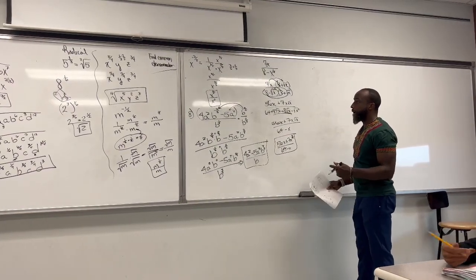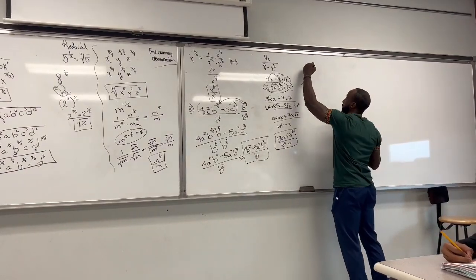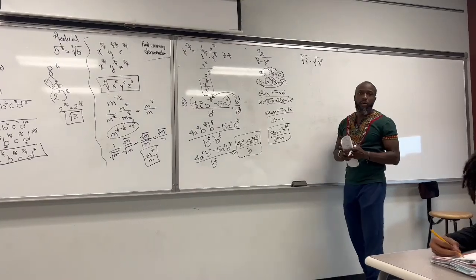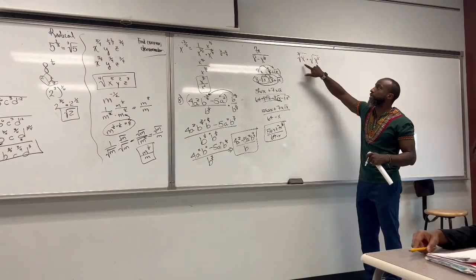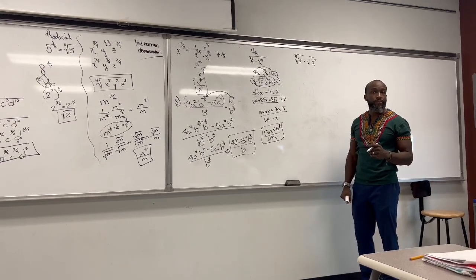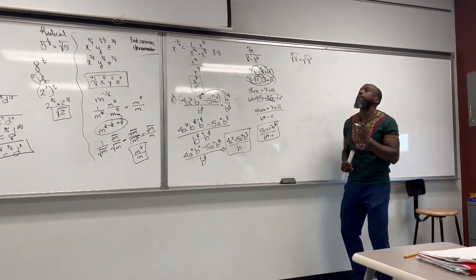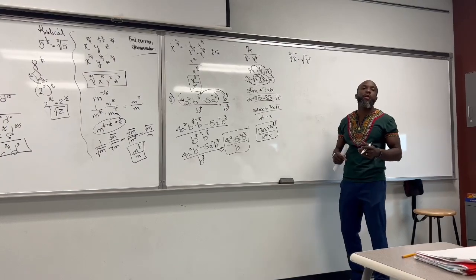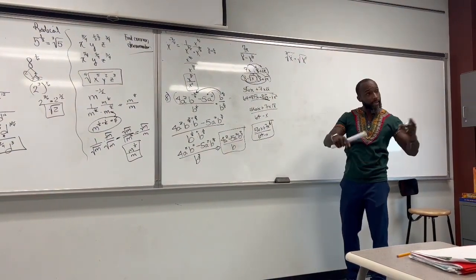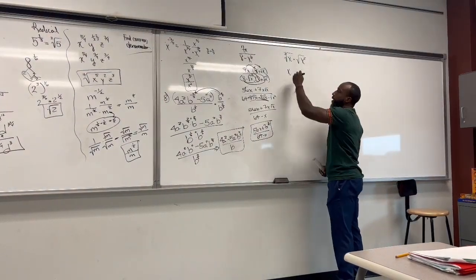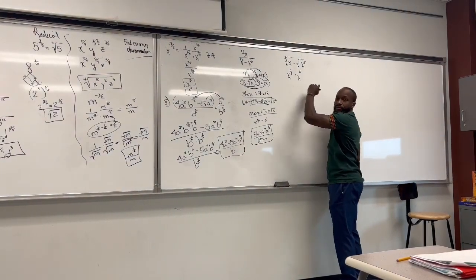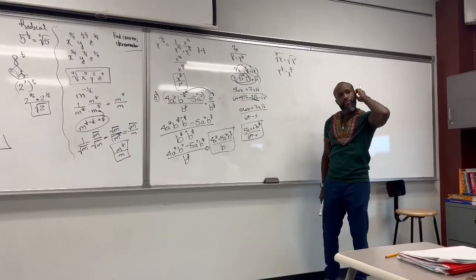Here's the beautiful part about rational exponents — we can do this multiplication: the cube root of x times the square root of x to the 5th. What we got to do here is change these to rational exponents. The cube root of x is x to the 1/3, and the square root of x to the 5th is x to the 5/2. When you multiply variables, what do you do to the exponents? You add them. So it's going to be x to the 1/3 plus 5/2.